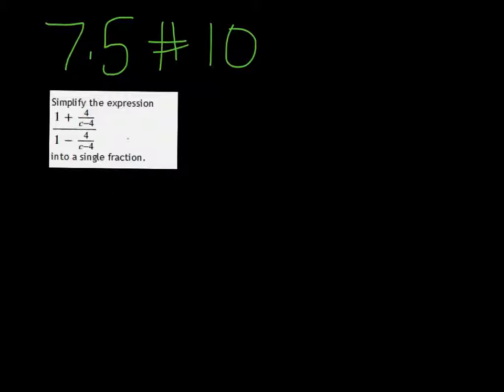Just look at the different denominators. We have a denominator of c minus 4 and c minus 4. That makes it convenient because they're both the same, so the LCD is c minus 4.